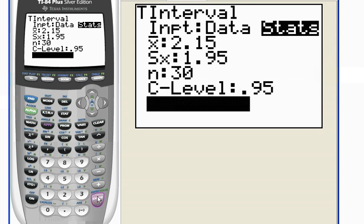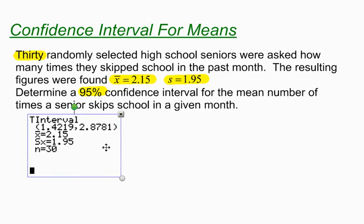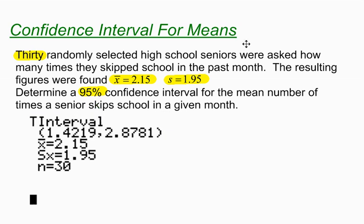When I hit Calculate, there it is — the interval itself. So I can say I'm 95% confident that the average number of times a senior skips school in a given month is between 1.4 and 2.8 times. I hope this helps, and have fun in your stats class.